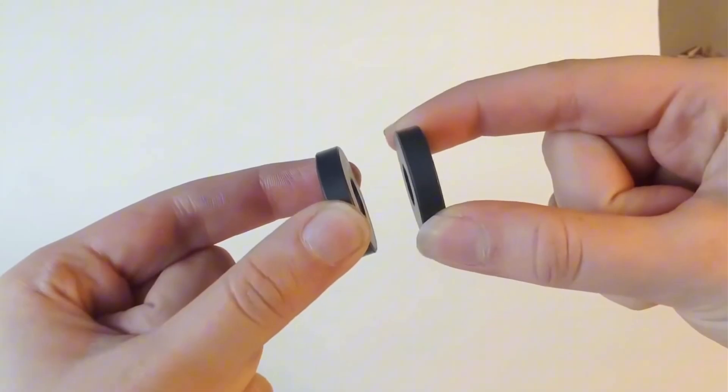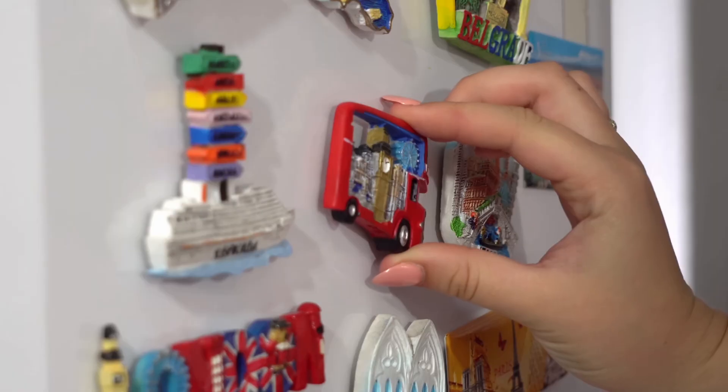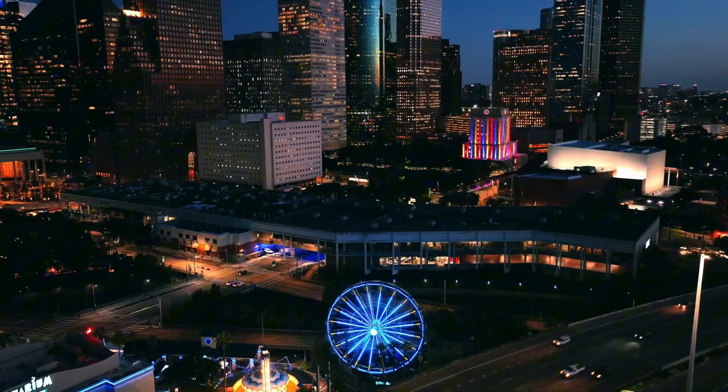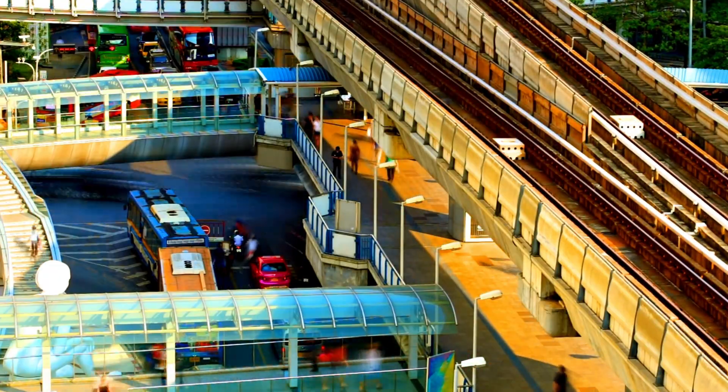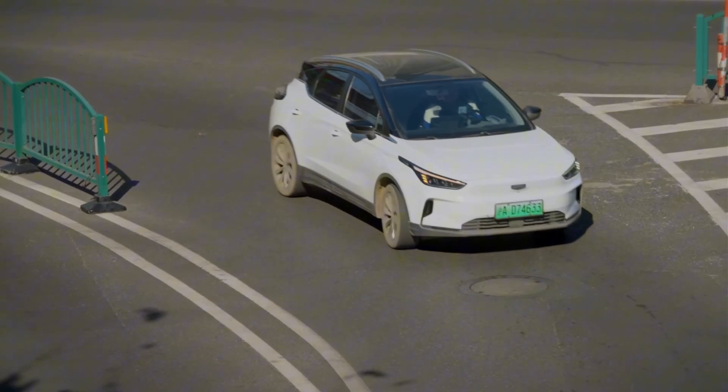Magnets. A seemingly trivial thing that holds your shopping list on the fridge or reminds you of last year's vacation. In reality, however, magnets are the invisible backbone of our entire modern world. They are hidden all around us, from smartphones to cars to power plants.